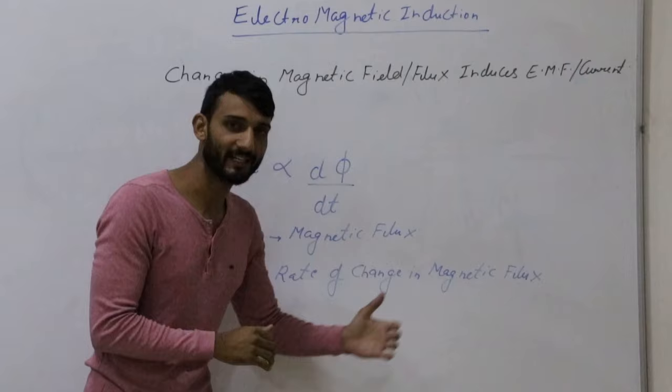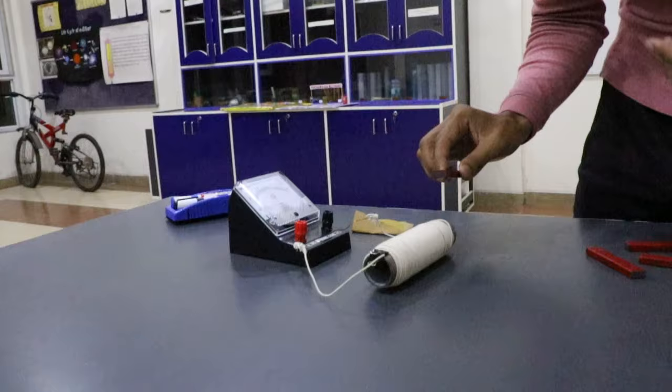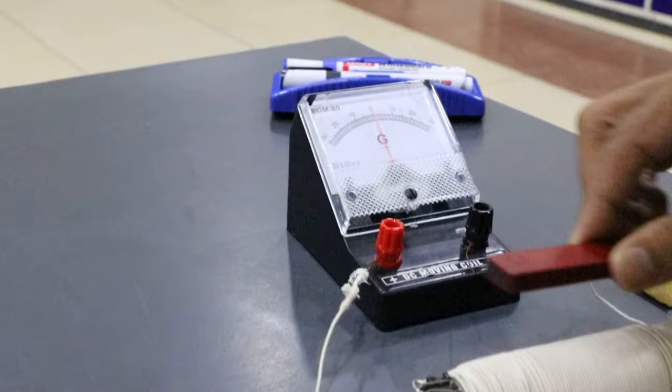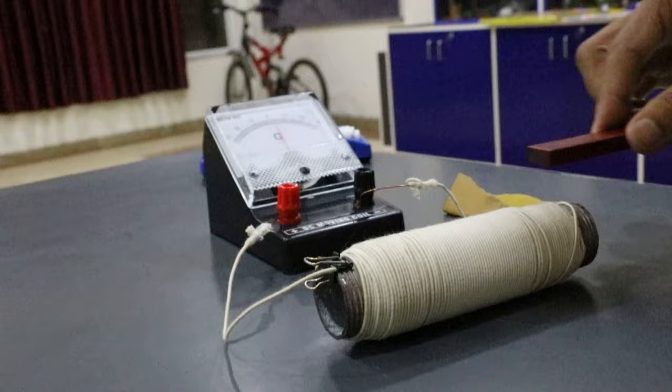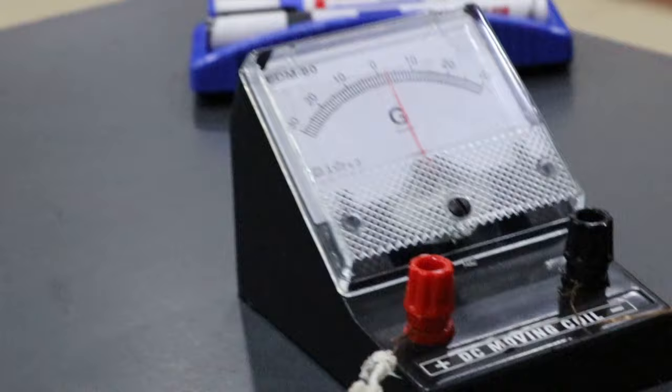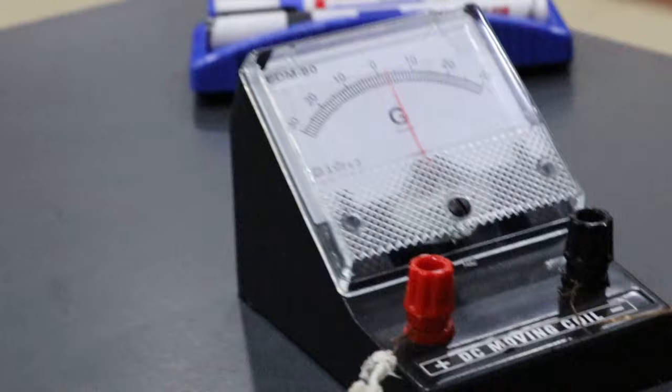To increase the rate of change in magnetic flux, we move the magnet faster. This is Faraday's second law. If I move the magnet fast, you can see the current value is increasing and the deflection in the galvanometer goes to a higher value, sustaining as long as there is motion in the magnet. This demonstrates Faraday's second law.